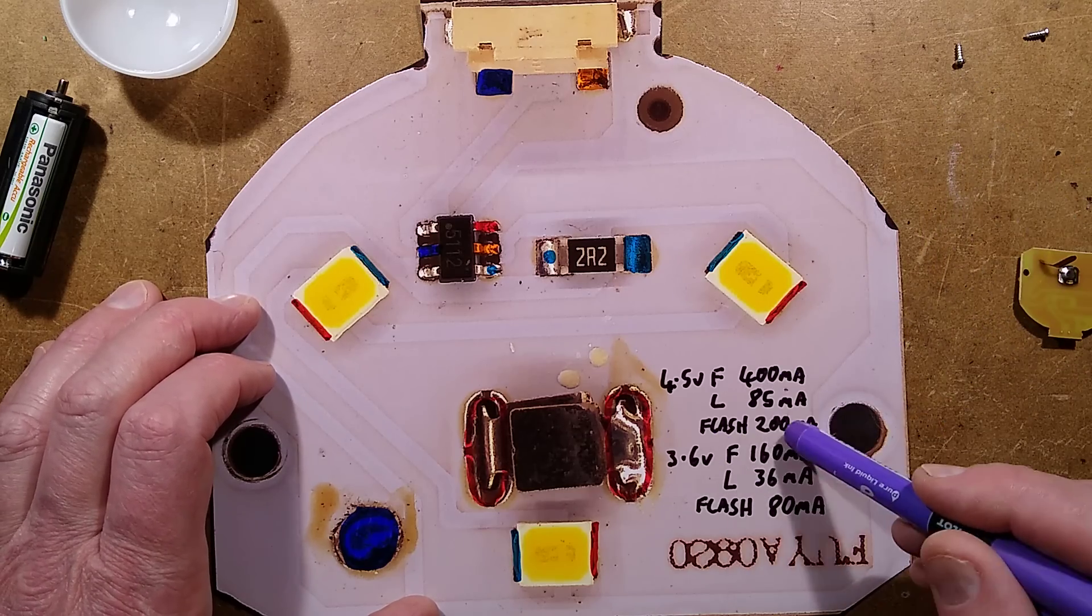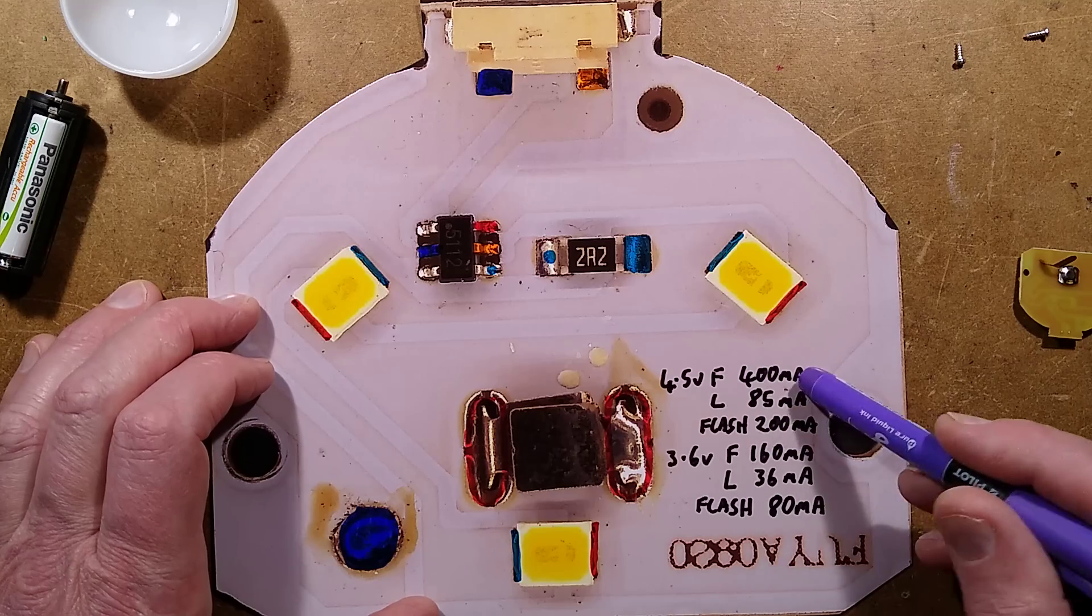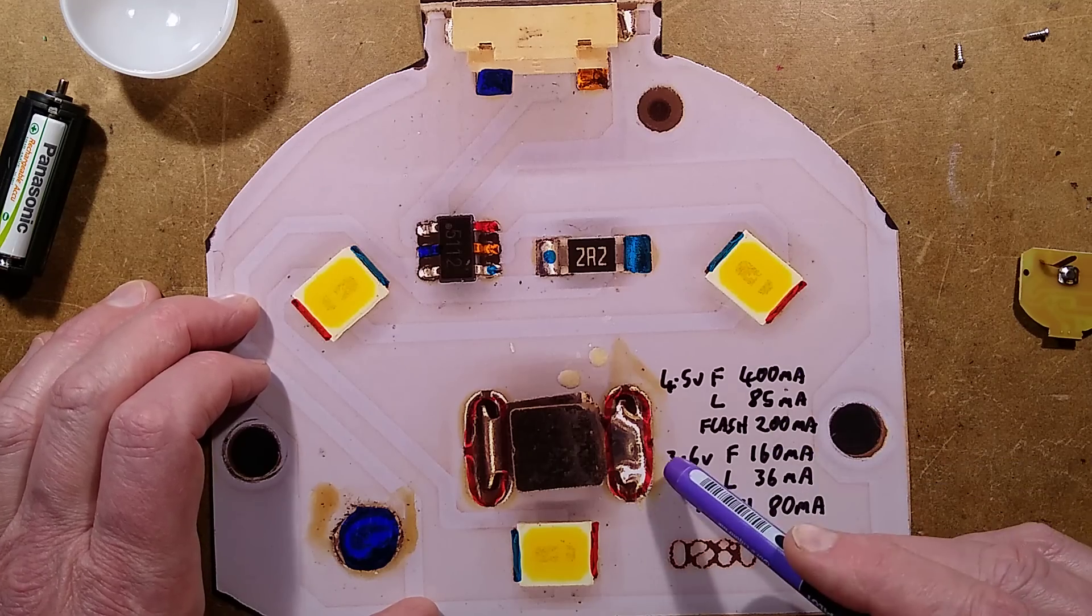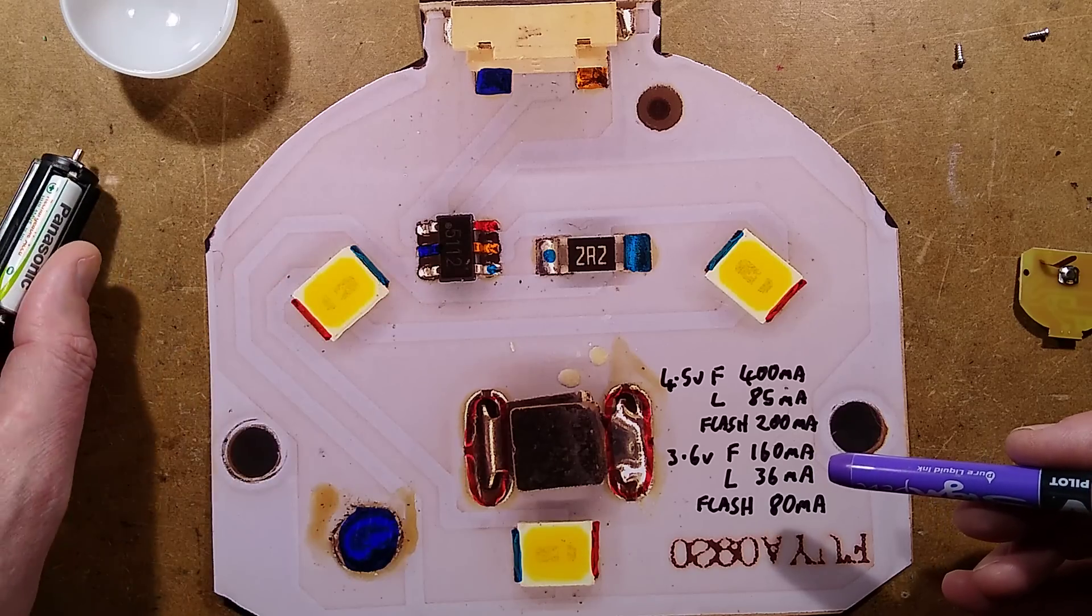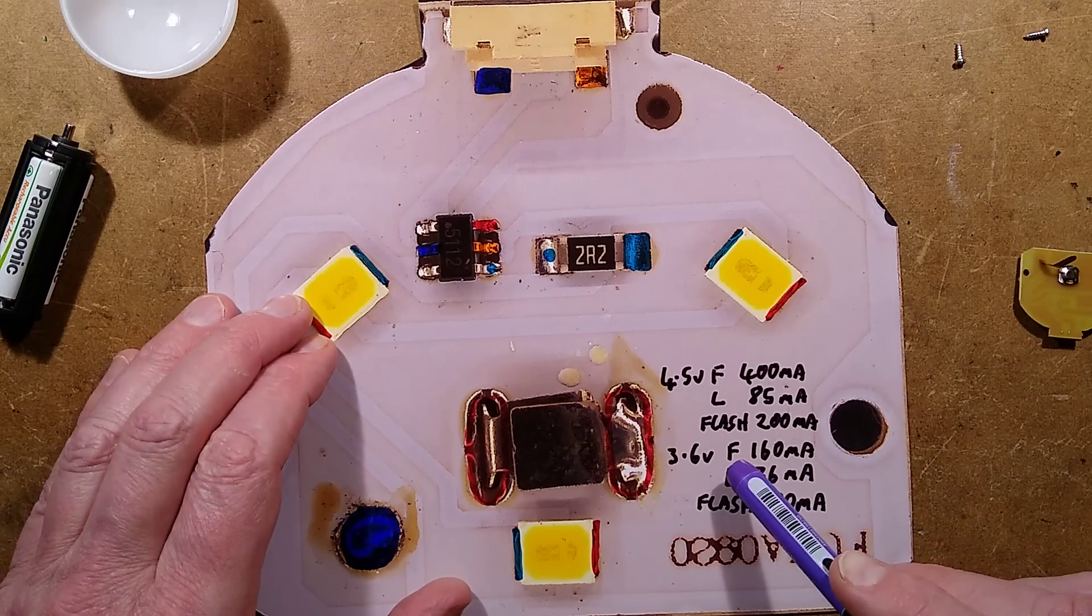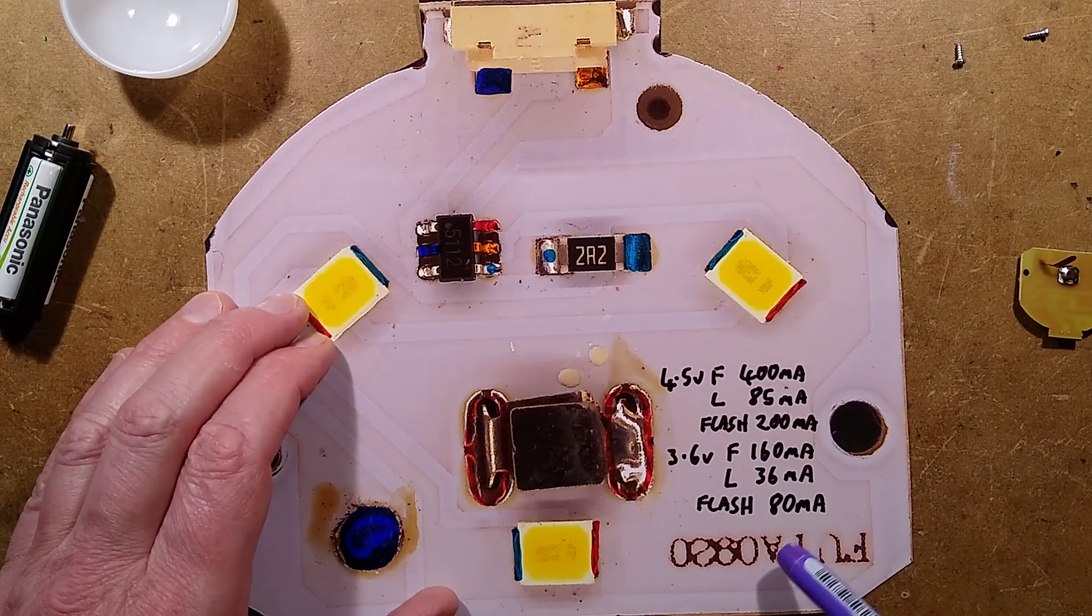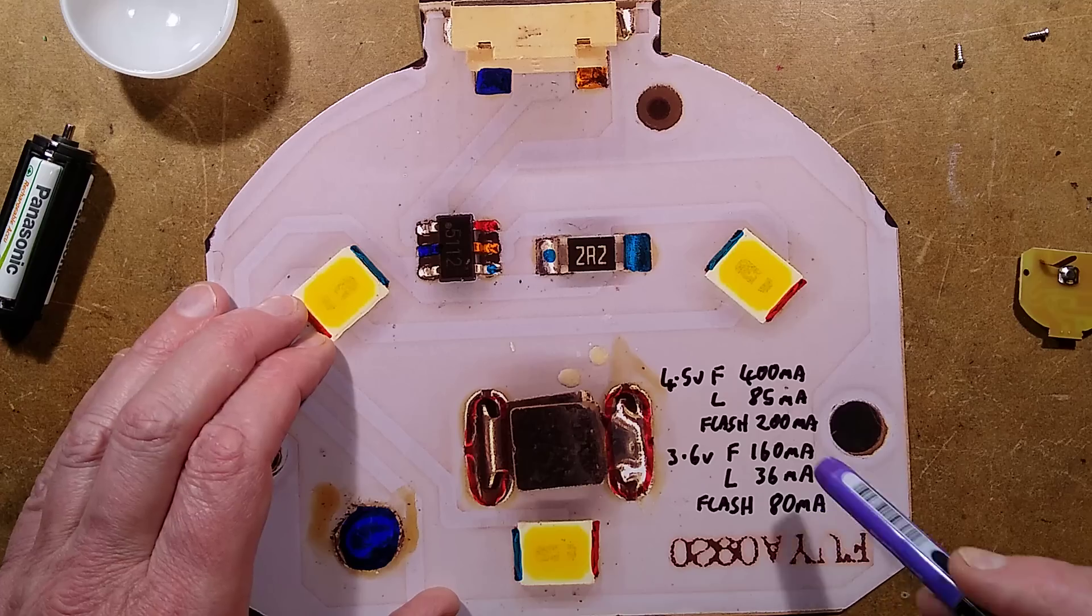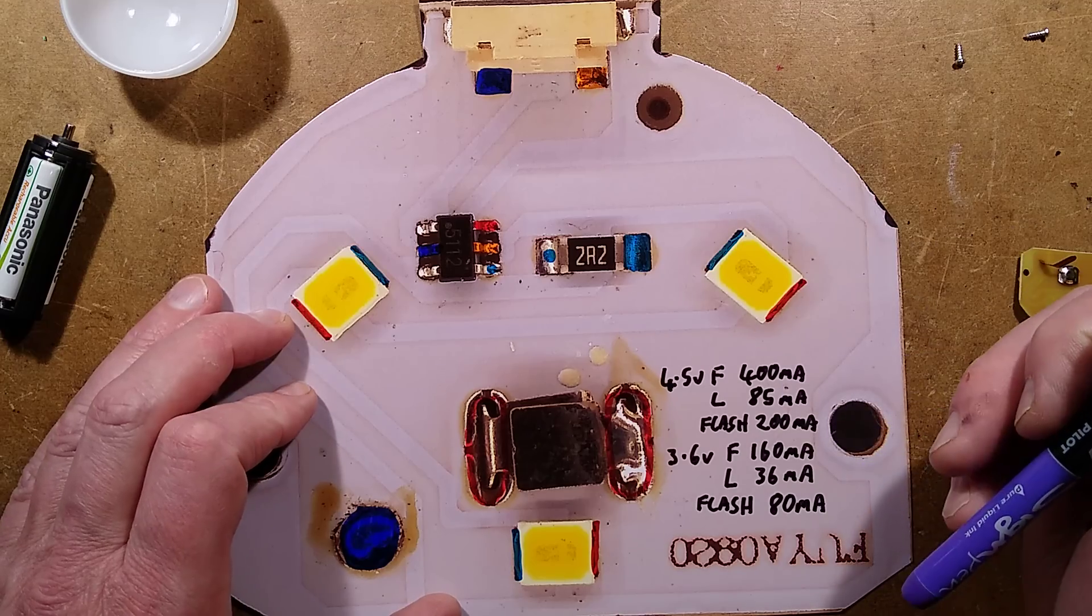At flashing it's obviously a 50-50 ratio, about 400 milliamps at 200 milliamps average. At 3.6 volts, a typical discharge voltage of nickel metal hydride cells, it starts off at full power at 160 milliamps, low is 36 milliamps, and flashing is 80 milliamps. To be honest I'd recommend increasing the value of that resistor if you want it to last any length of time.